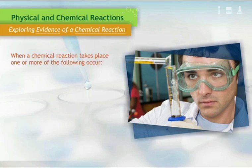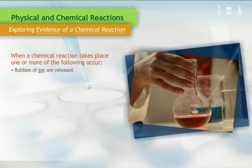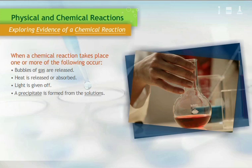When a chemical reaction has taken place, one or more of the following events will occur. Bubbles of gas are released. Heat is released or absorbed. Light is given off. Precipitate is formed from the solutions. A smell is produced or there is a change in color.